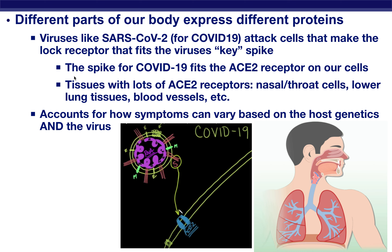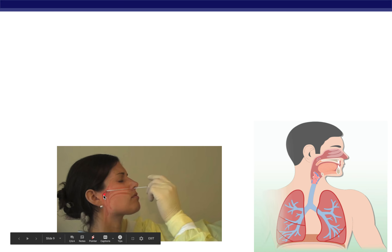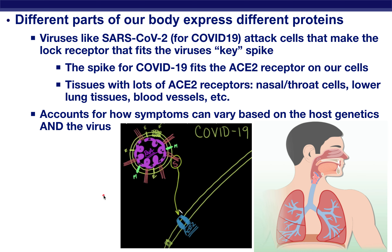The ACE2 receptor plays a really huge role in determining where the virus will attack. ACE2 receptors line your nasal passages and your throat — that's why a lot of COVID tests swab the back of that nasal-throat region. It's also really present anywhere with lots of blood vessels: your lung tissues, your kidney tissues, your skin — that's why sometimes people break out into rashes with COVID. This accounts for the wide range of symptoms, especially in individuals that already have blood-related conditions like diabetes or heart disease, which is why those people are more prone to severe symptoms.